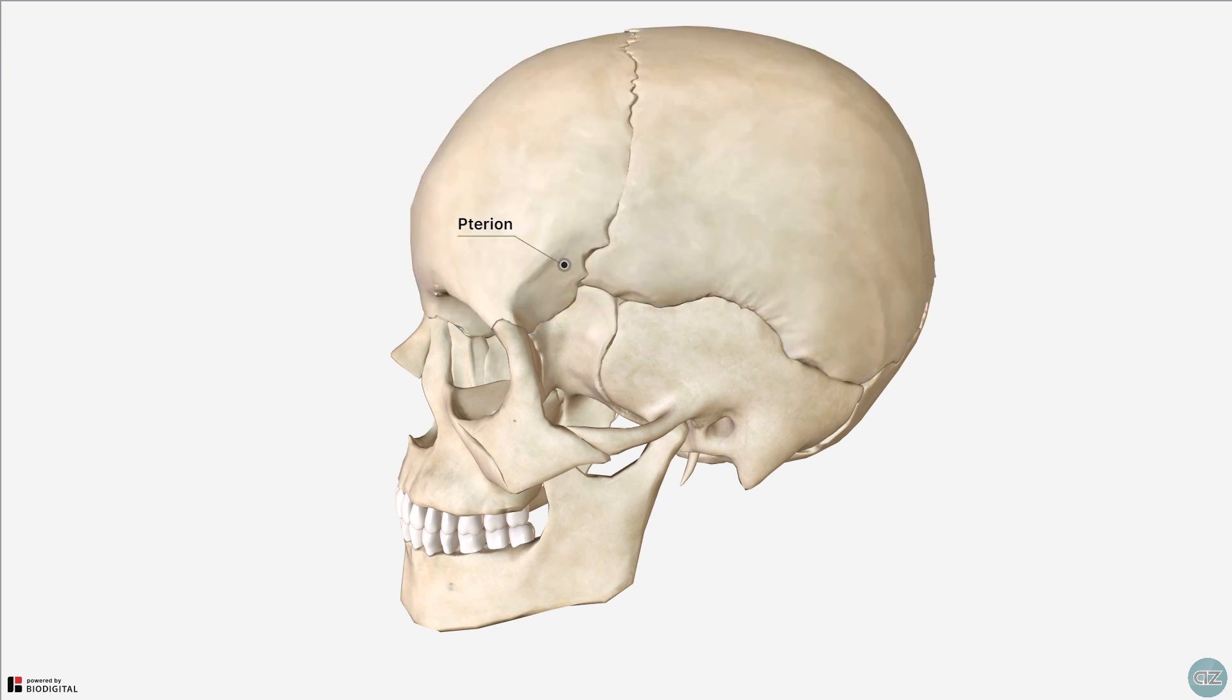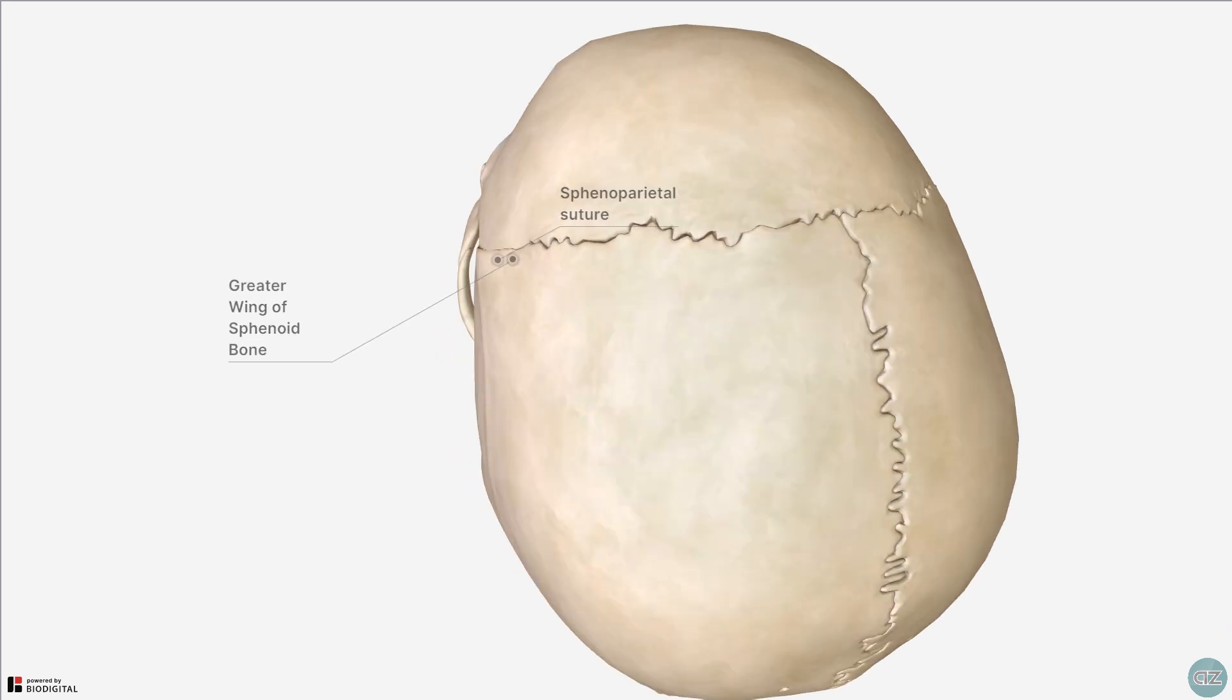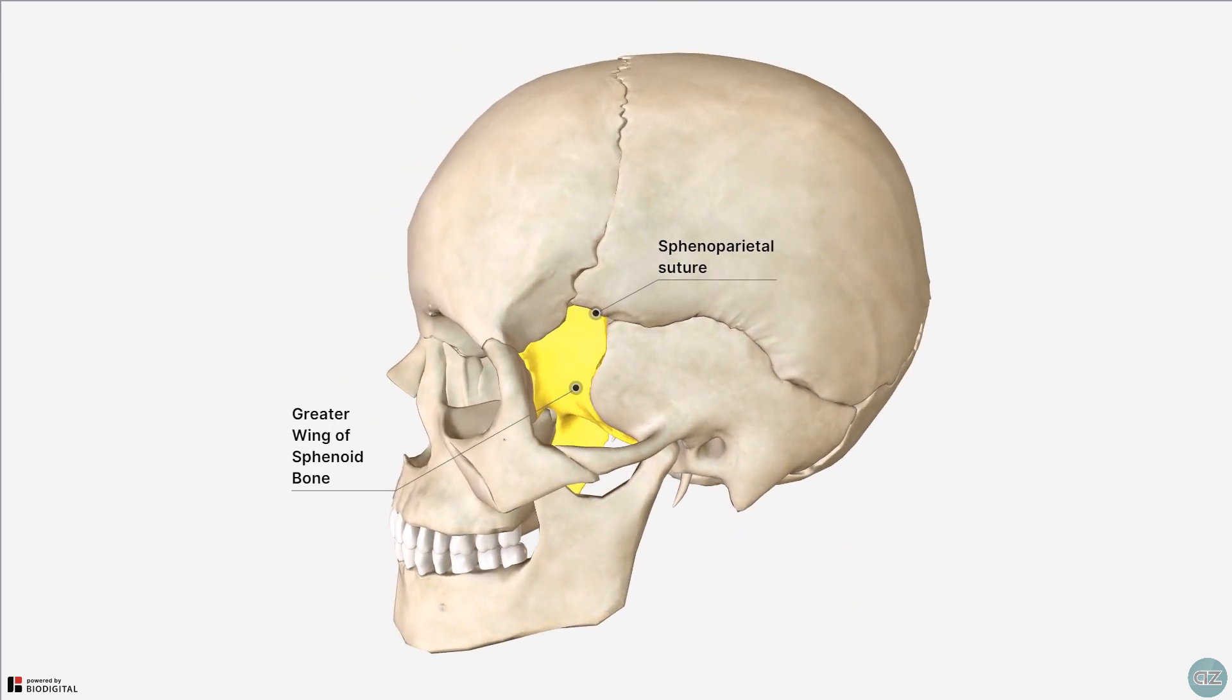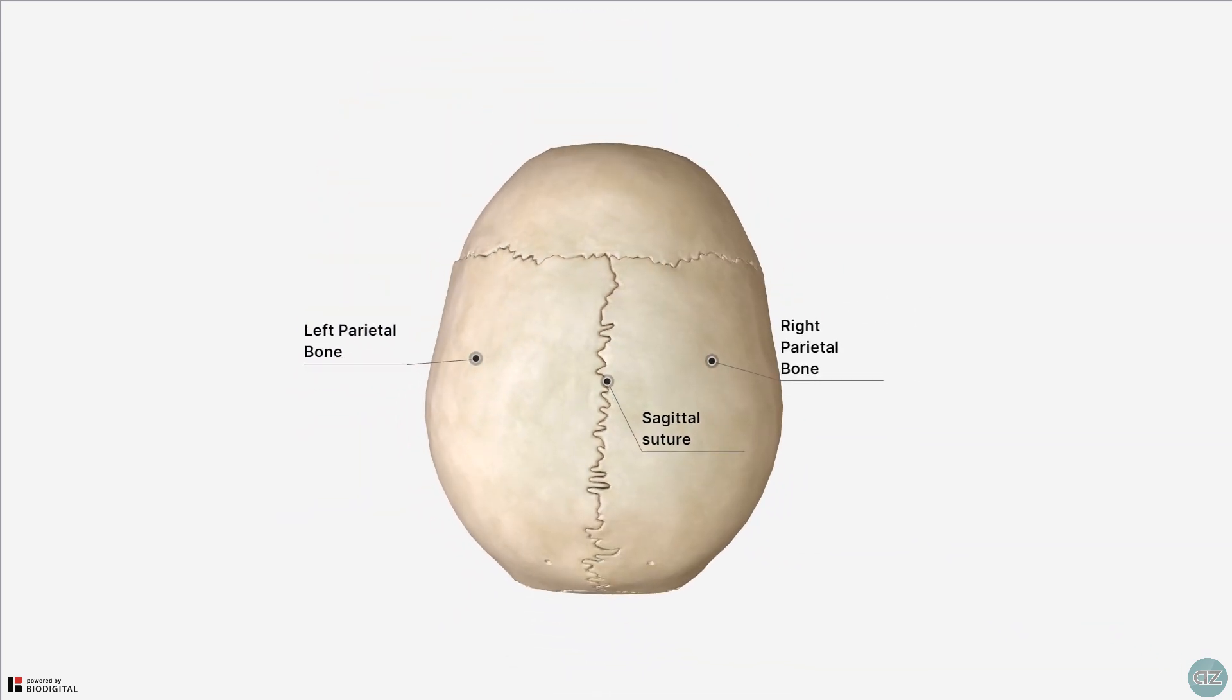Moving on to the parietal bones now, there are two parietal bones which we've already seen anteriorly articulate with the frontal bone at the coronal suture. The parietal bones also articulate with the greater wing of the sphenoid at the sphenoparietal suture. Inferiorly, the parietal bone articulates with the temporal bone at the squamous suture. Looking superiorly in the midline, the parietal bones articulate with each other via the sagittal suture.